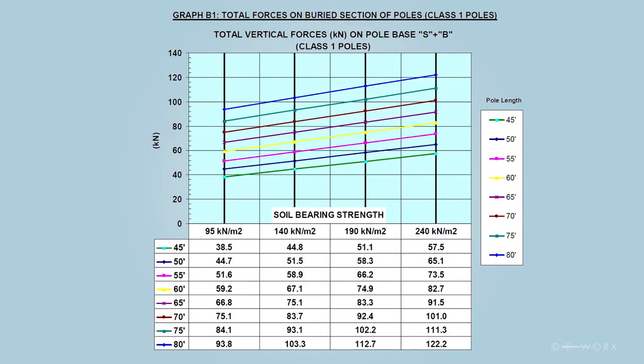The data in this table can be turned into sets of curves. This set is for class one poles.